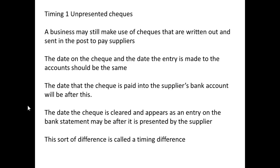Timing differences can come about as a result of unpresented checks. When a business writes its checks and sends them to suppliers, the usual procedure is that the check is posted. On that date, the entry is made to the business's accounting system. However, the supplier may have to wait a day or so before the post arrives, and even if the check is then taken to the supplier's bank and paid in straight away, the check may take one or two days to clear before it appears on the bank statement. Those differences are referred to as timing differences.